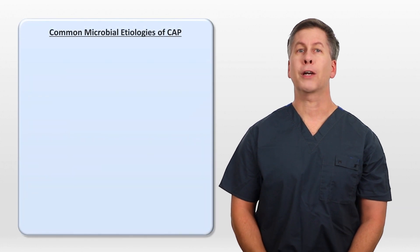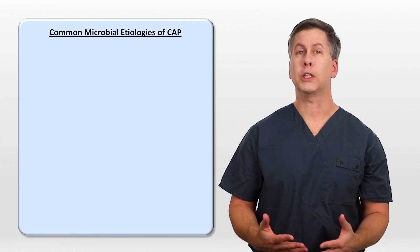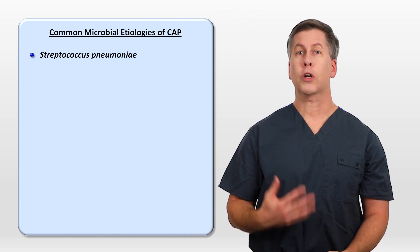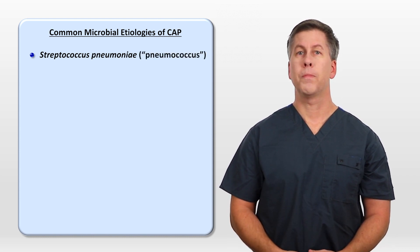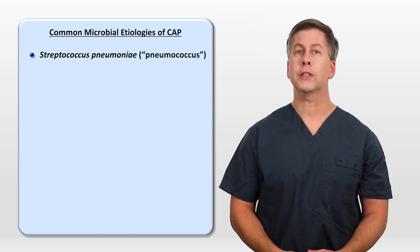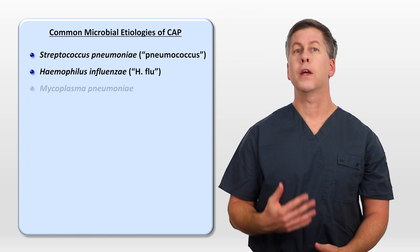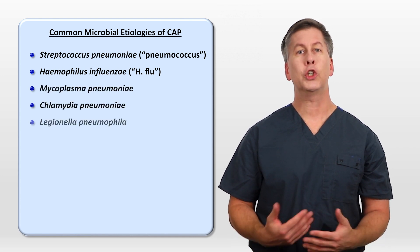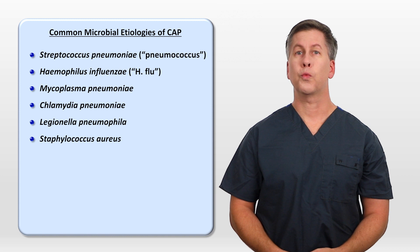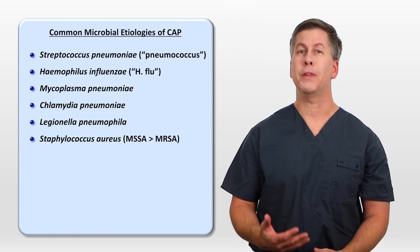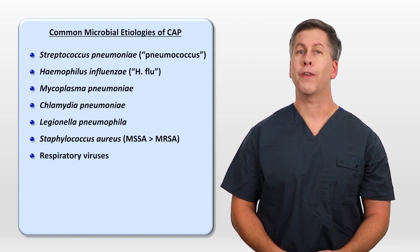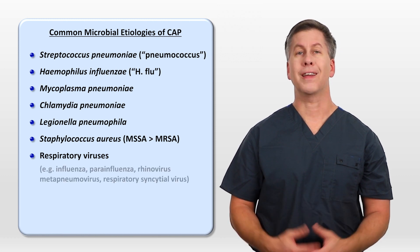To understand the treatment, you need to be aware of the common microbial etiologies of CAP. The most common is Streptococcus pneumoniae, more commonly known as pneumococcus. Other causes include Haemophilus influenzae, mycoplasma, chlamydia pneumoniae, legionella, staph aureus, with MSSA being more common than MRSA, and a variety of respiratory viruses, most notably influenza.